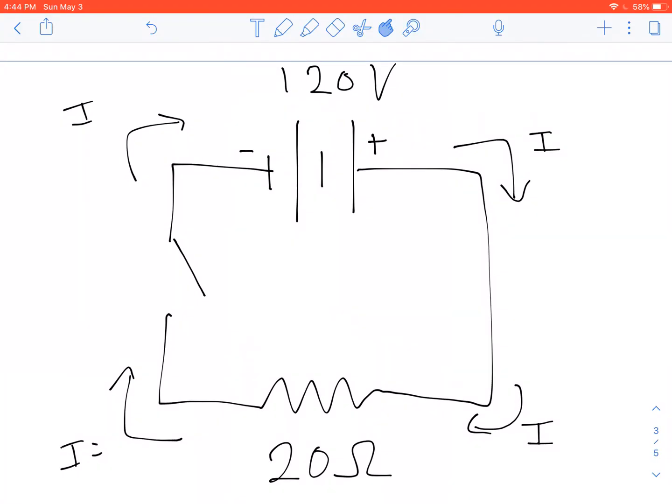And that means 6 amps flows out of the battery, goes around here. 6 amps goes through the resistor and comes out the other side, goes up around here, and goes around here.